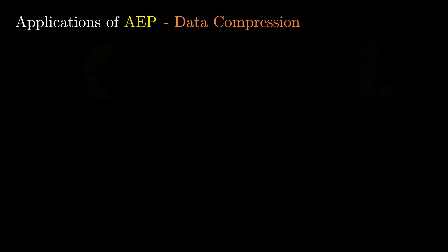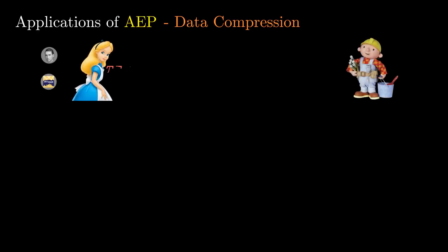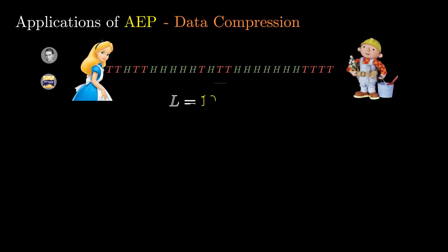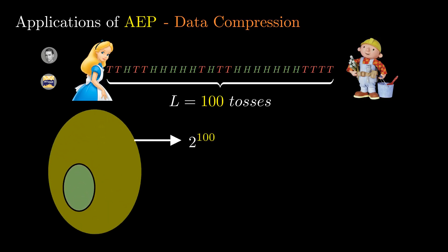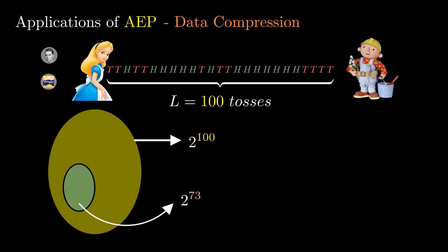As an application of AEP, let us look at data compression. Imagine Alice has a biased coin which she tosses 100 times and wants to convey the outcomes to Bob. Each outcome can be expressed as a single bit, so she needs to communicate 100 bits. But is there a better scheme? From our understanding of AEP, we know that there are 2^(LH) typical sequences, which for our example translates to about 2^73 sequences, and most of the time Alice will be observing one of these typical sequences.